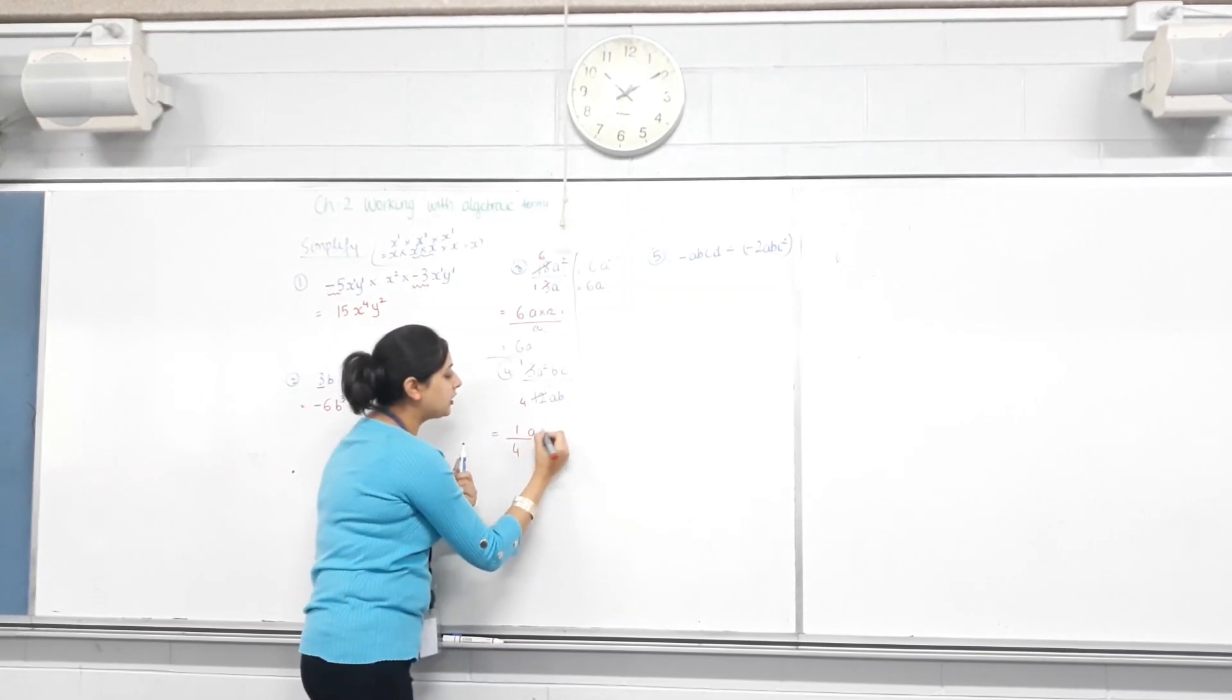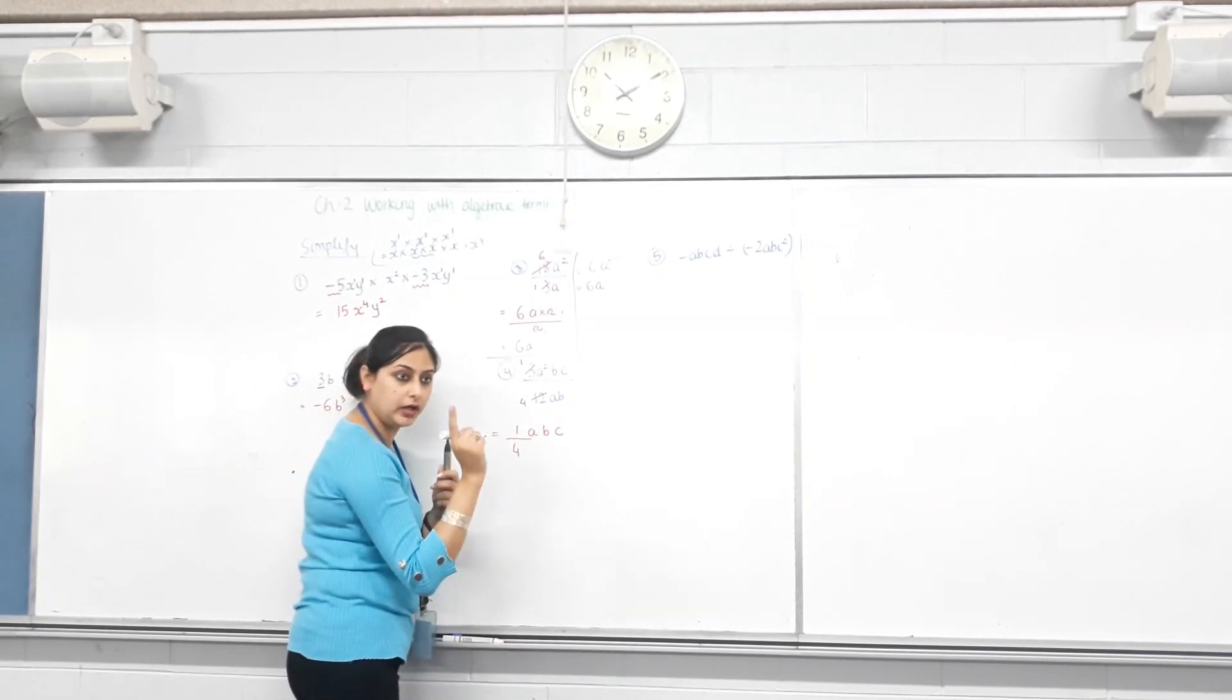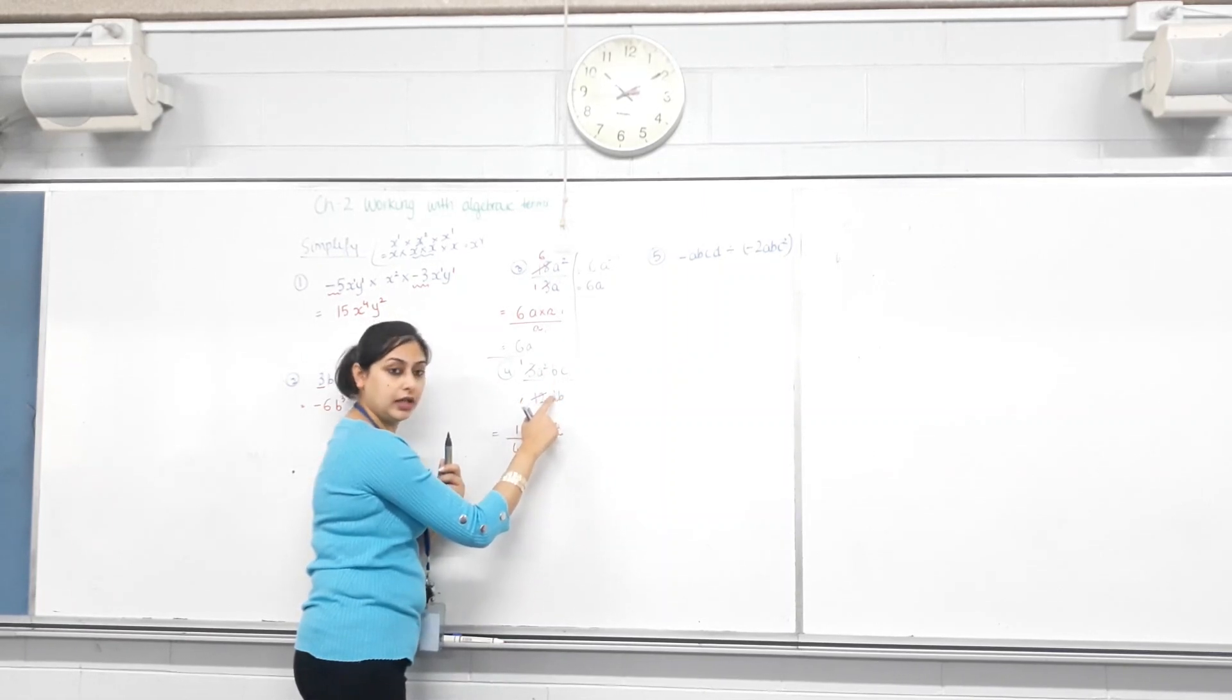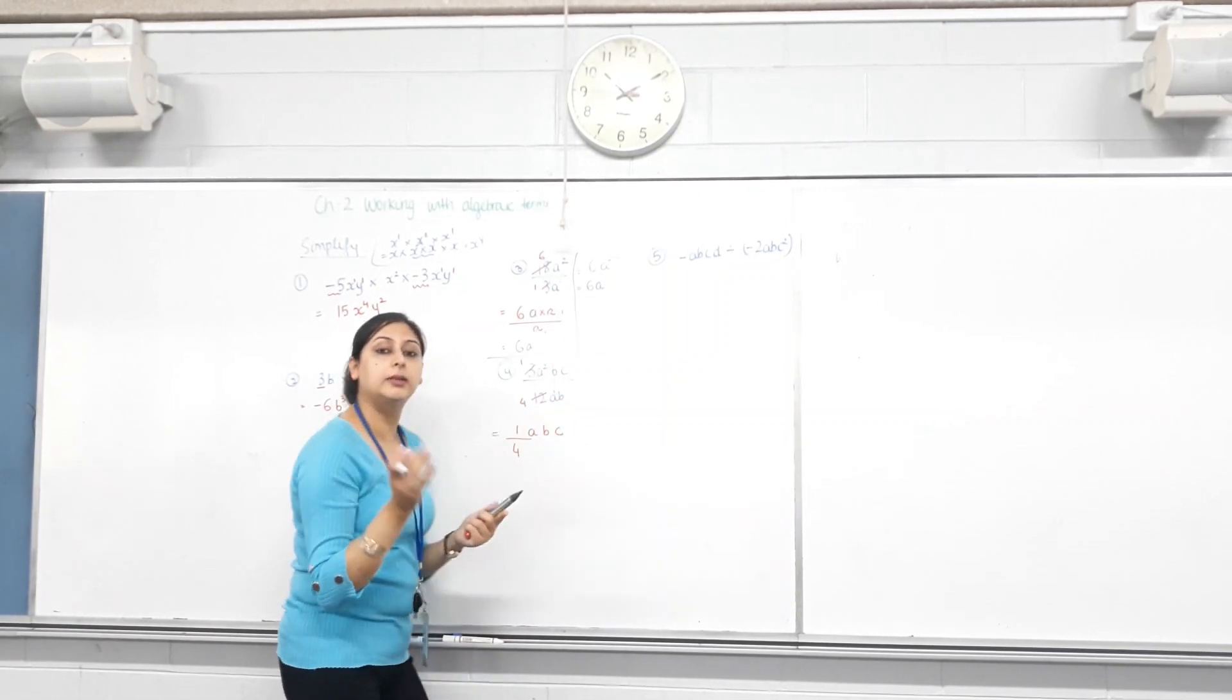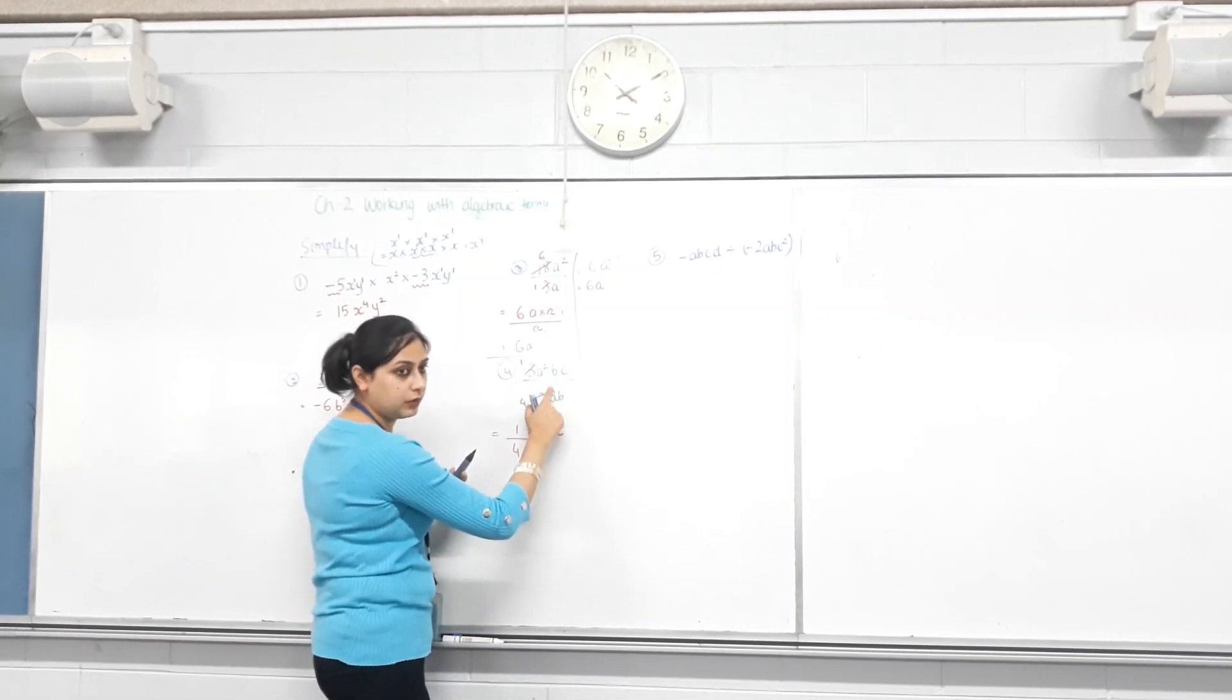Now, how many different letters do we have? A, B, and C. Let's deal with them one at a time. Power of A here? Two. A here? One. Are they being multiplied or divided? Divided. So, what's 2 take away 1? One.